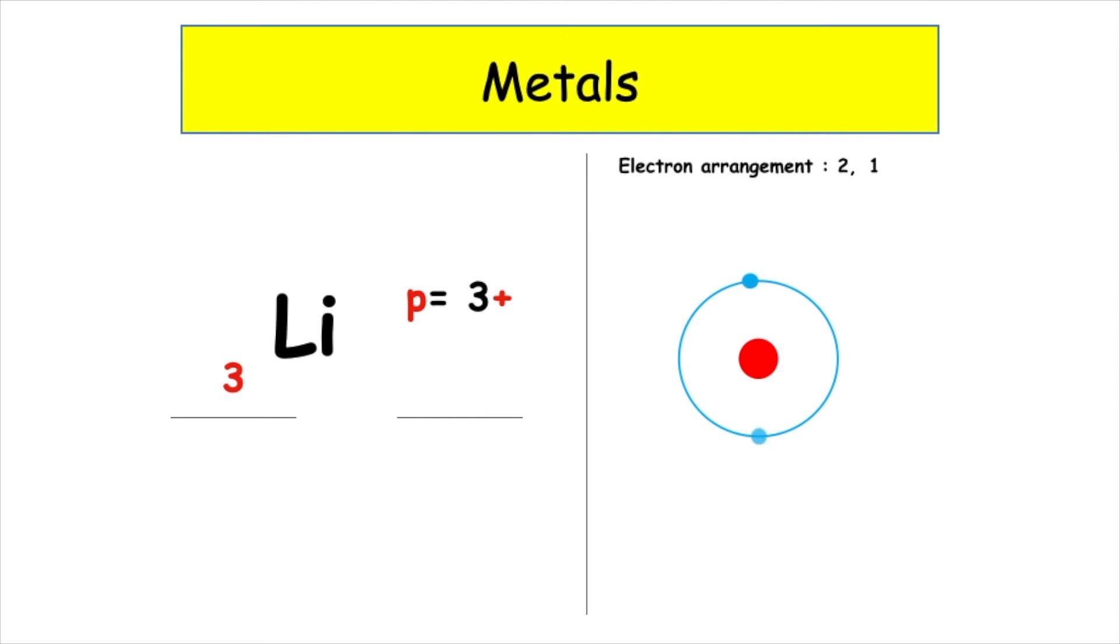That gives us a total of 3 electrons, and if we've got 3 positive and 3 negative, that gives us an overall charge of 0, which means we've got an atom.